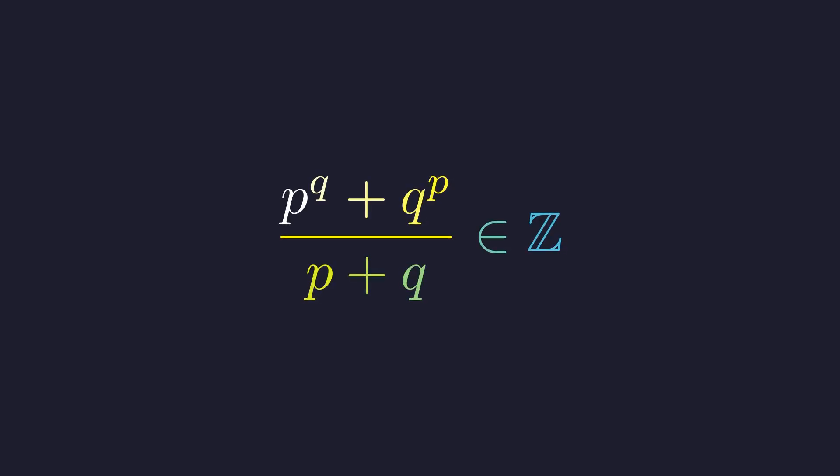From the 2015 Turkey Math Olympiad comes this beautiful problem in number theory. We need to find all prime numbers p and q where this expression p to the q plus q to the p divided by p plus q results in a whole number.